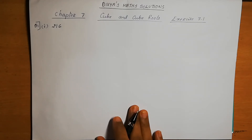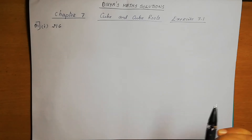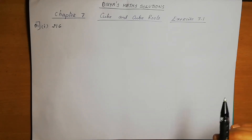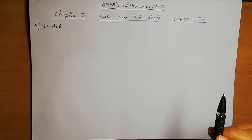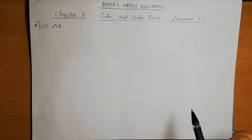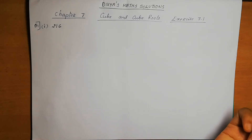Question number 1: Which of the following numbers are not perfect cubes? Perfect cubes — the same way we find square roots, we can take the factors. For squares, we pair up two numbers. For cubes, we need to pair up three numbers. If all factors form triplets, that is a perfect cube.